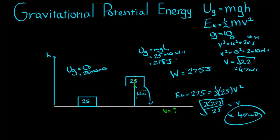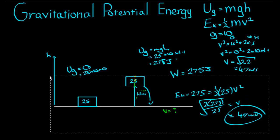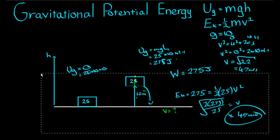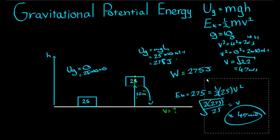If you're paying attention, you might notice we have a v² term in the kinetic energy formula and a v² term in the motion formula — and that's because this motion formula actually relies on the idea of energy and work being done to an object. We'll do another question next time, this time involving a shot put.